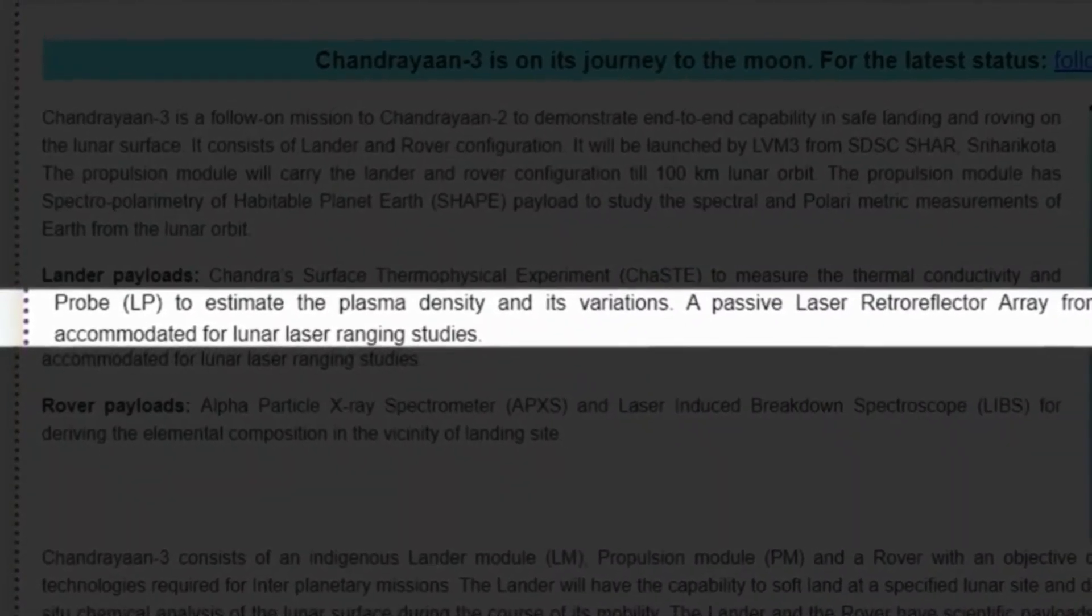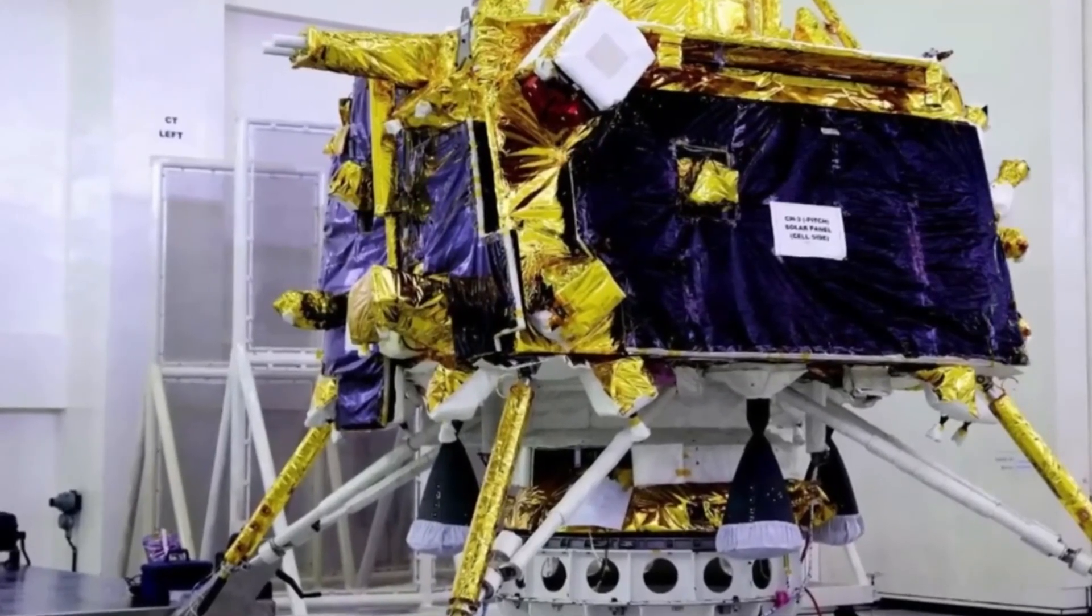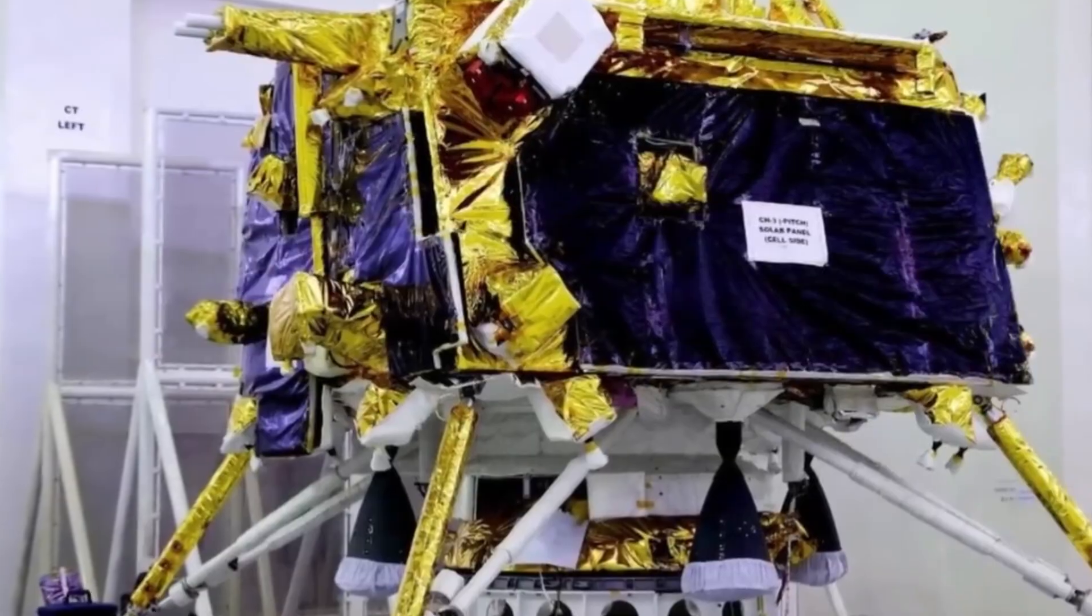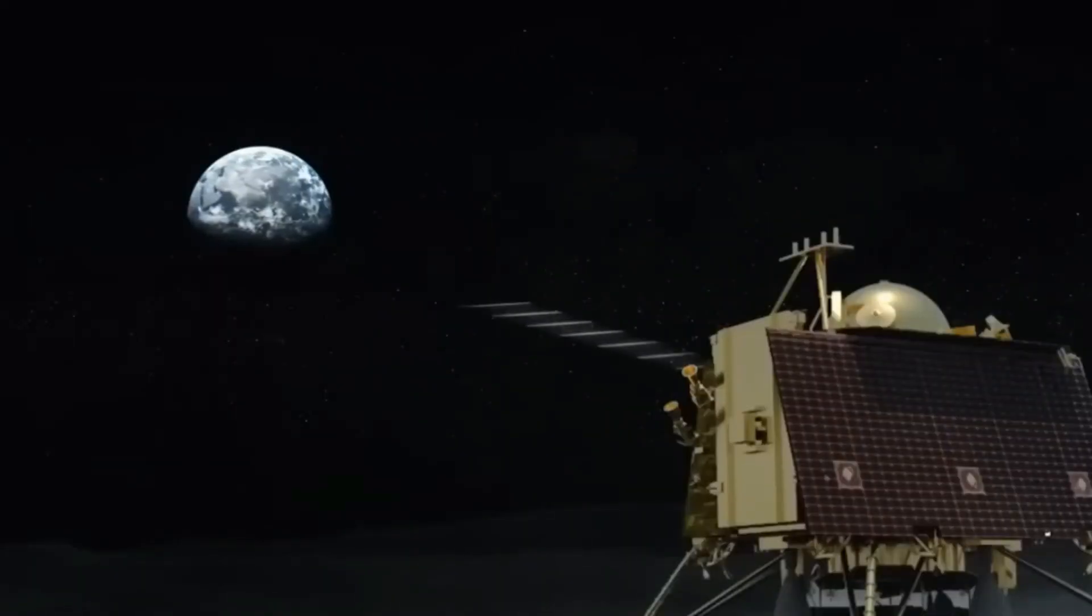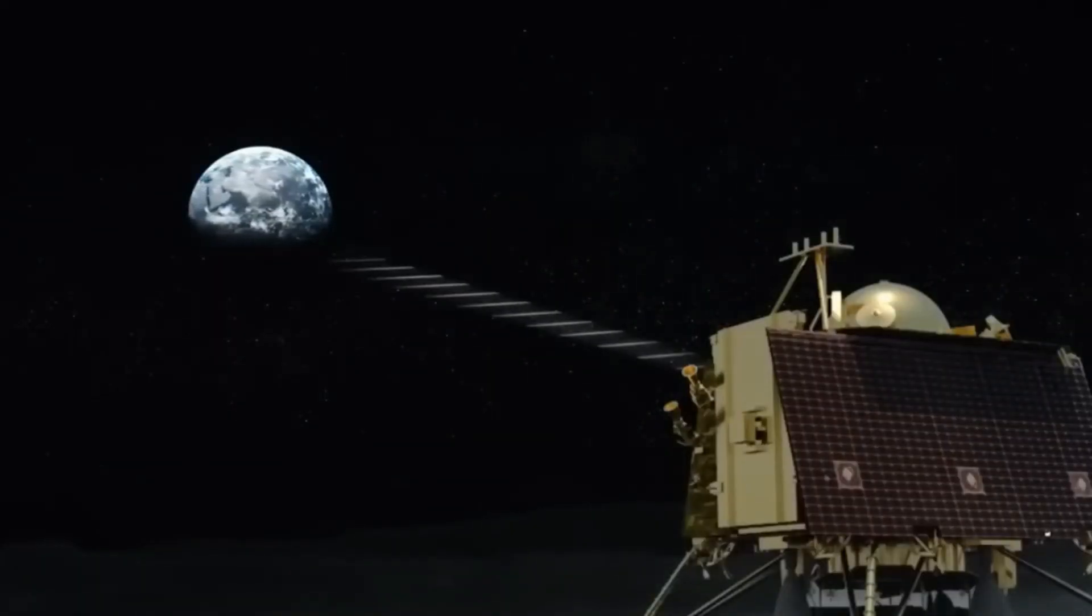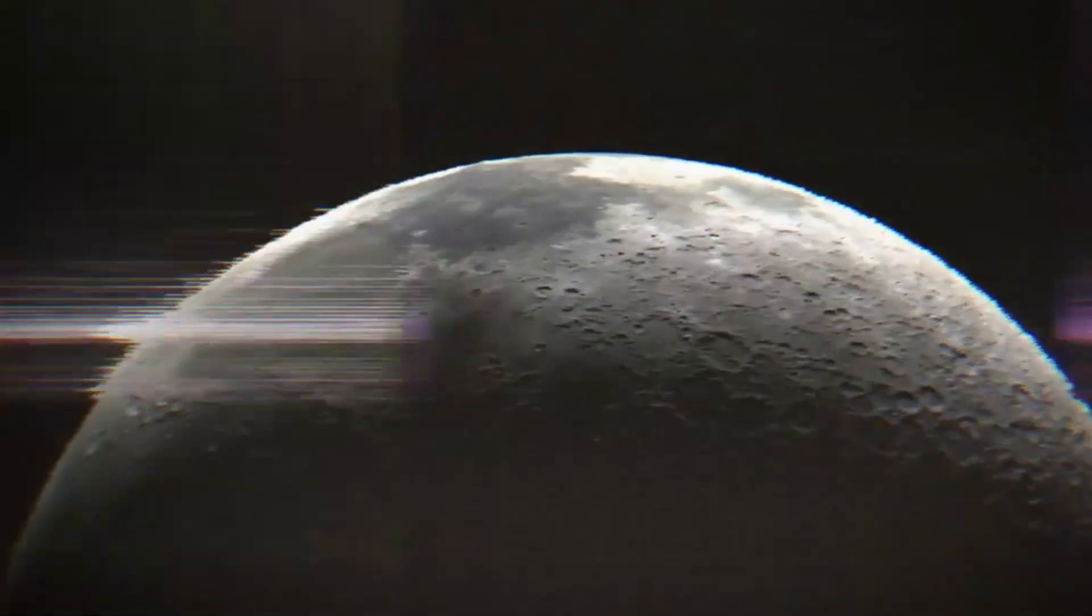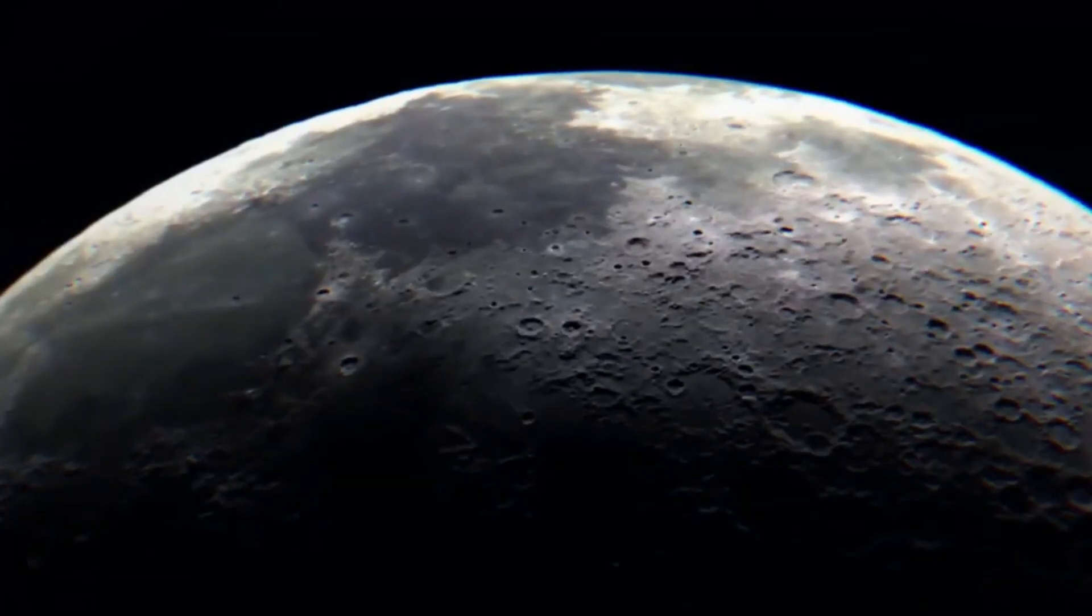Lunar Retro Reflector Array (LRRA). This payload consists of eight small mirrors that reflect laser beams from Earth. This allows scientists to measure the precise distance between Earth and Moon, as well as test Einstein's theory of general relativity. LRRA has shown that the Earth-Moon distance varies by about 30 centimeters per day due to gravitational effects.